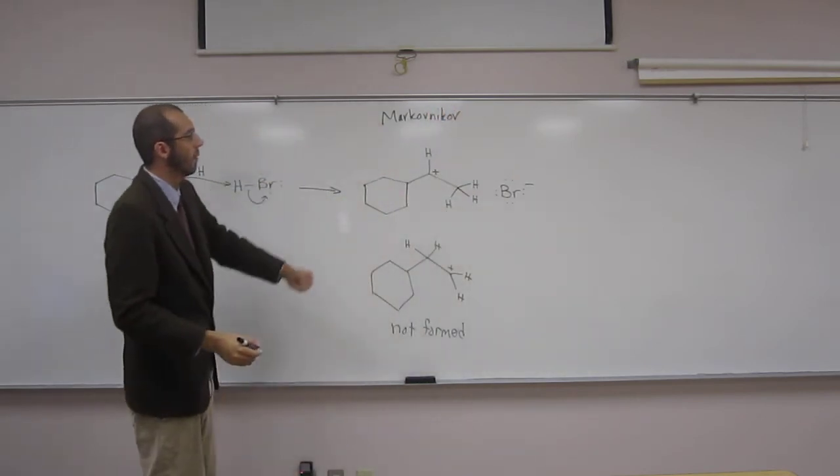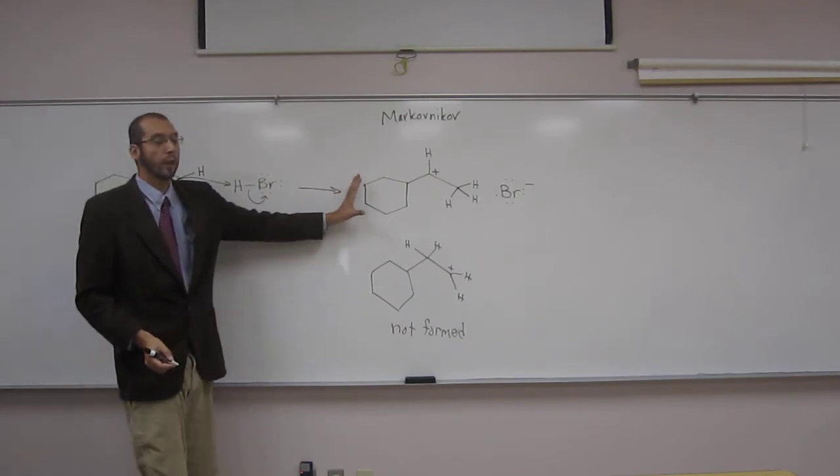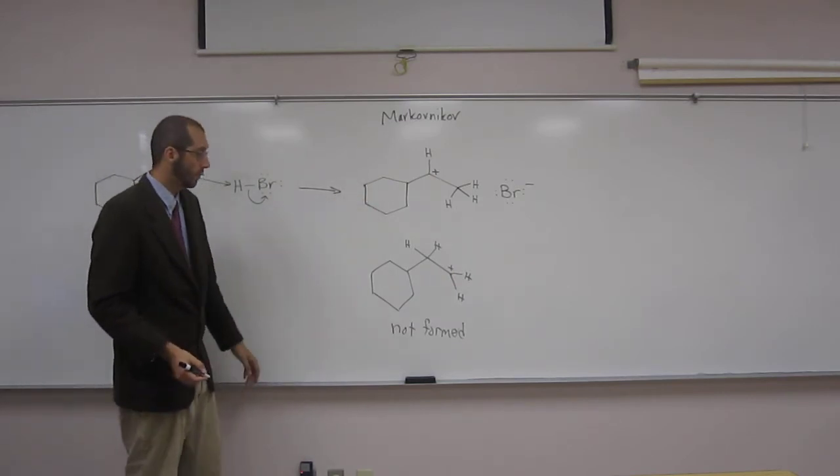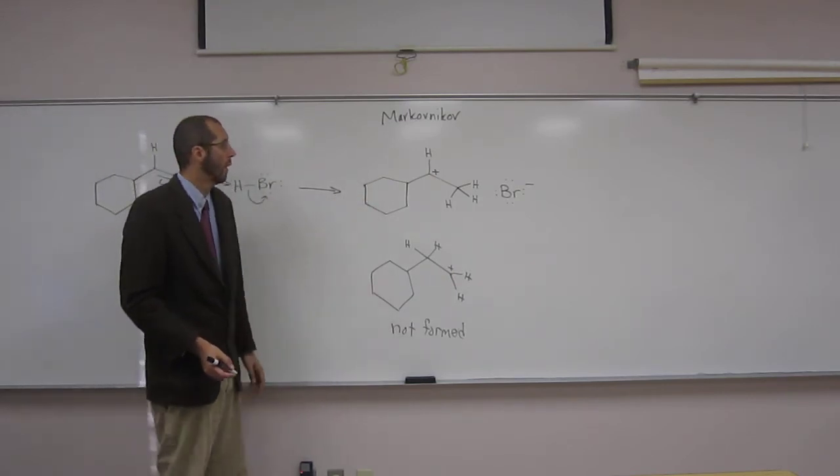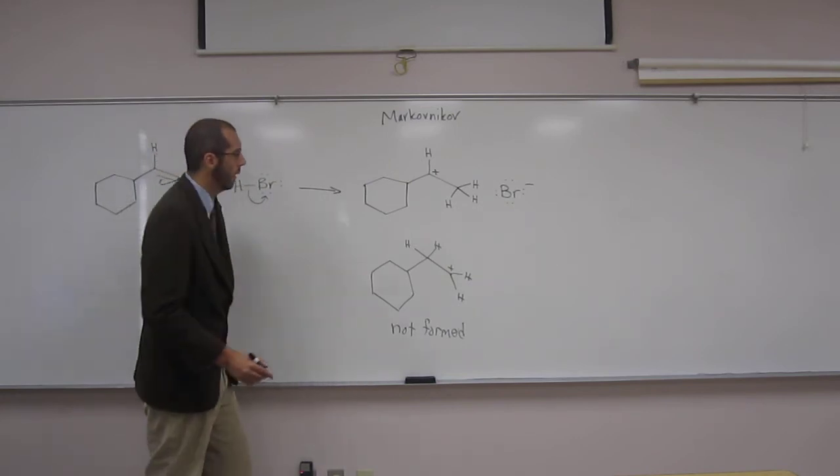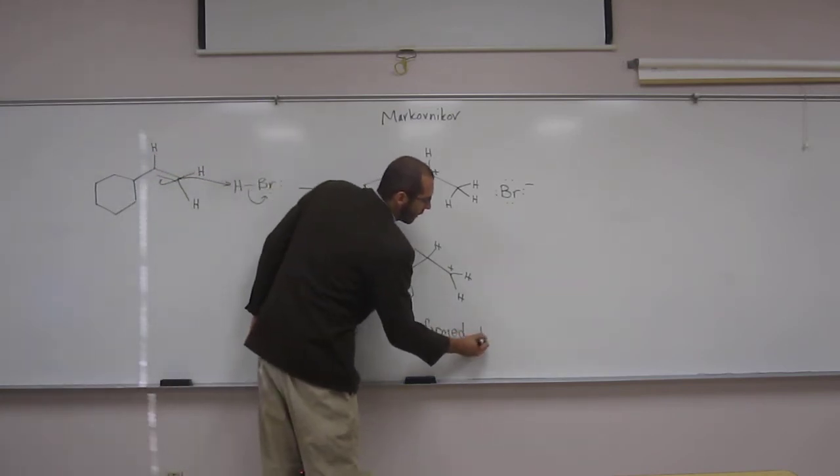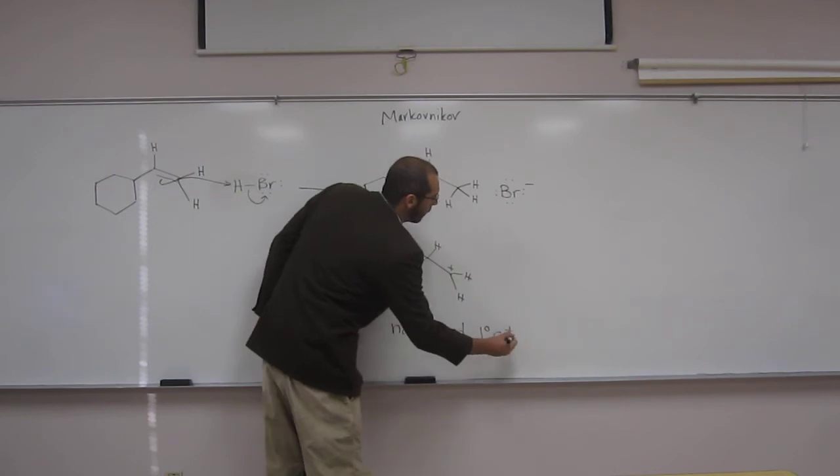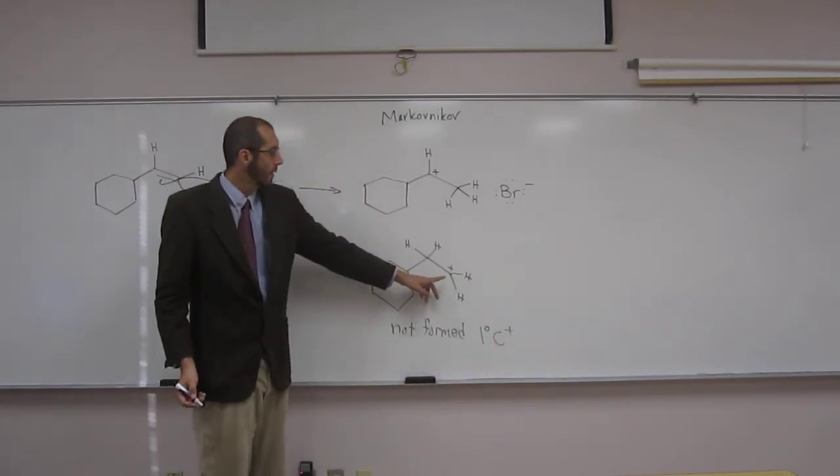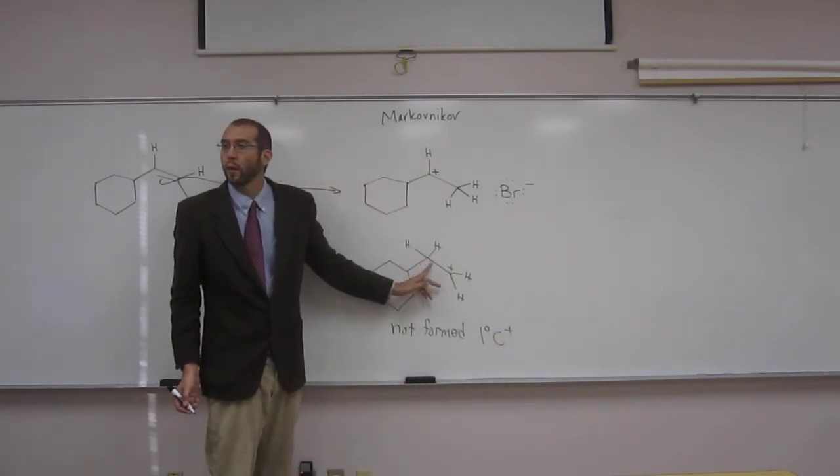So here we're showing the Markovnikov carbocation ion. This one's not formed. Well, why is that? Well, if you look, this is a primary carbocation ion down here, right? This carbon is only attached to one other carbon.